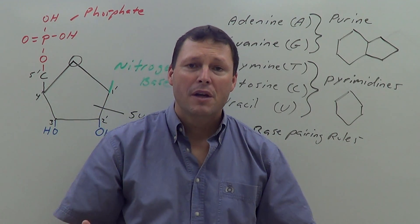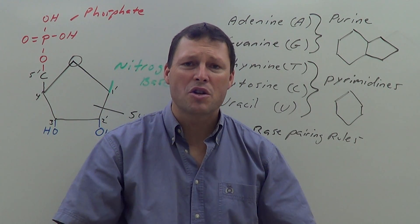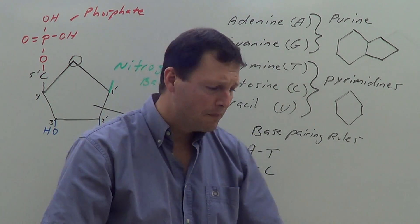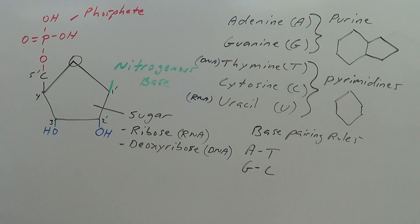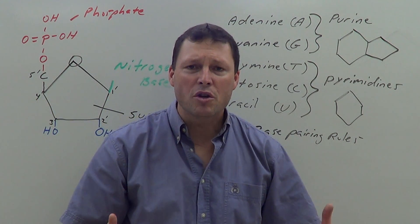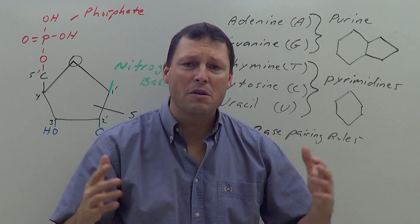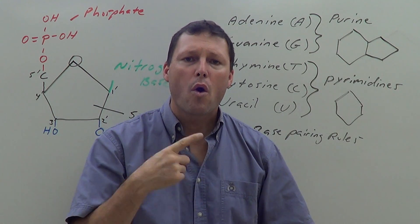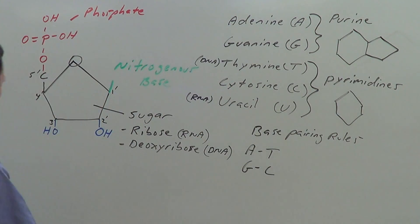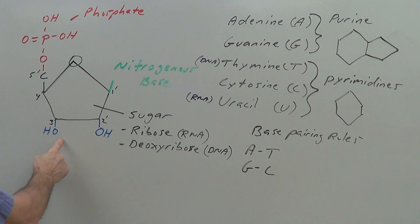The three prime carbon is attached to a hydroxyl group, which leads us to how nucleotides are connected. When the next nucleotide is added, it is always connected to the hydroxyl group on the three prime carbon — never anywhere else. This is because the reaction is facilitated by enzymes, which are highly specific and catalyze only the same reaction over and over: between the phosphate of the incoming nucleotide and the hydroxyl on the three prime carbon.